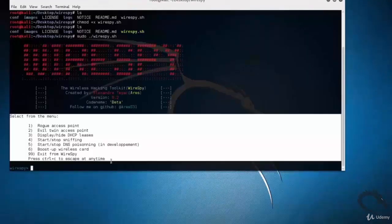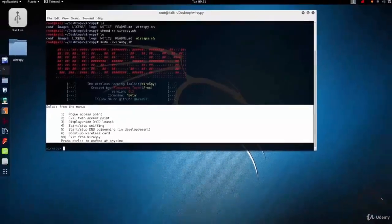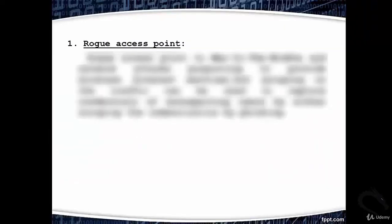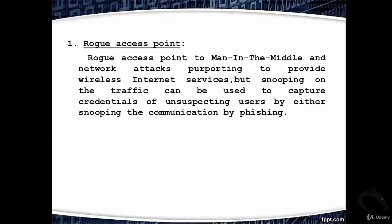Here you can see the features of the WireSpy tool. First one: Rogue Access Point — used for man-in-the-middle attacks and network attacks, purporting to provide wireless internet services while snooping on traffic, and can be used to capture credentials of unsuspecting users by either snooping communications or phishing.